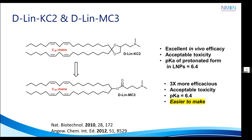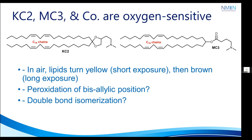From that experience, it has been found that KC2, MC3, and in general the DLIN family are oxygen sensitive. These lipids have two lipophilic chains with two conjugated cis double bonds, and because of these moieties, these lipids turn yellow after exposure to air. There is a high possibility of peroxidation at the allylic position, which is very reactive, and also double bond isomerization — meaning cis to trans isomerization of the carbon-carbon double bond.